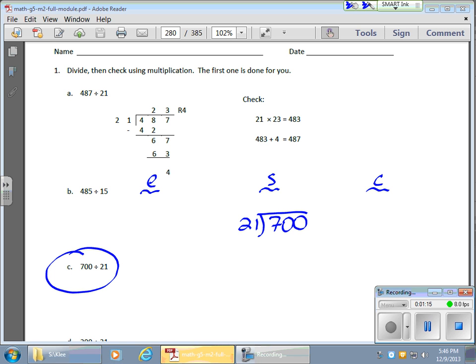I'll start dividing. So 21 goes into 7, 0 times. If you want to put a little 0 in there, that's fine. Here's your 7, bring down your 0. And 21 goes into 70 some amount of times. I'm not too sure. So here comes my estimate. Over here, I'll put my estimate.